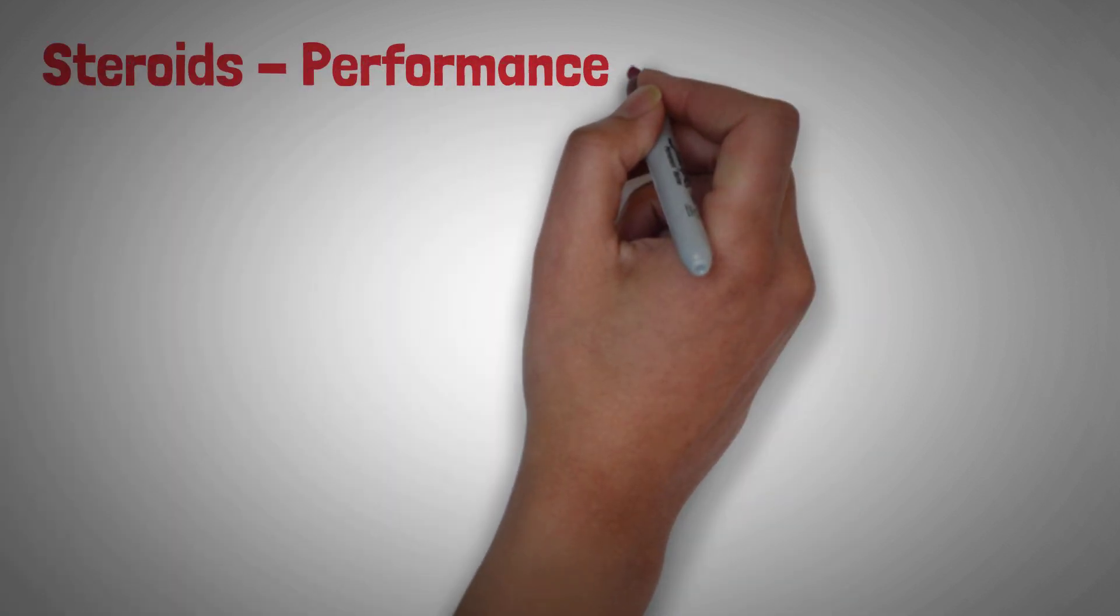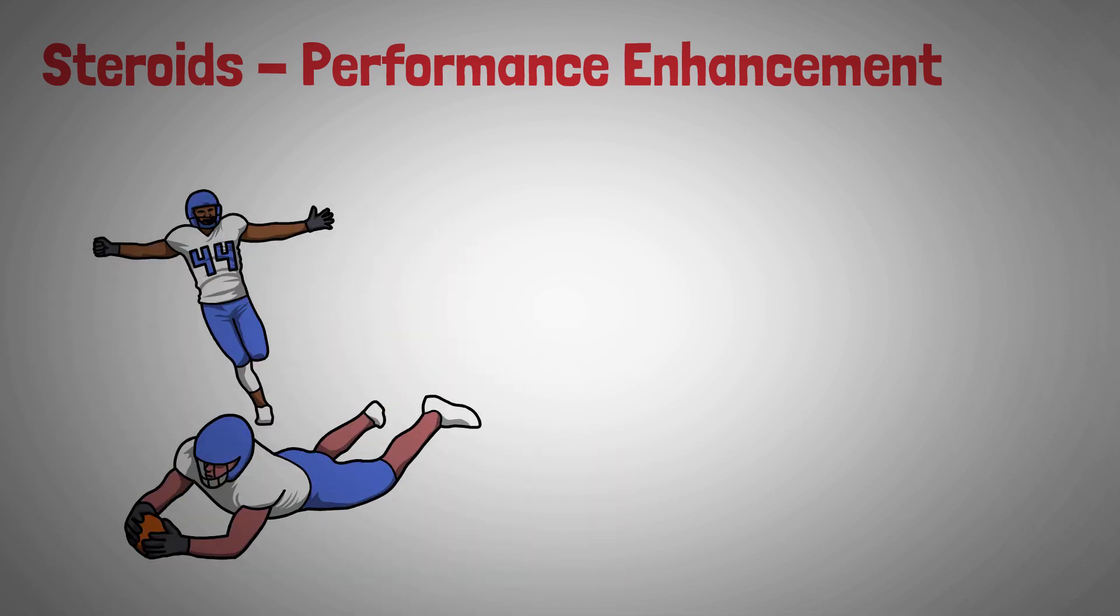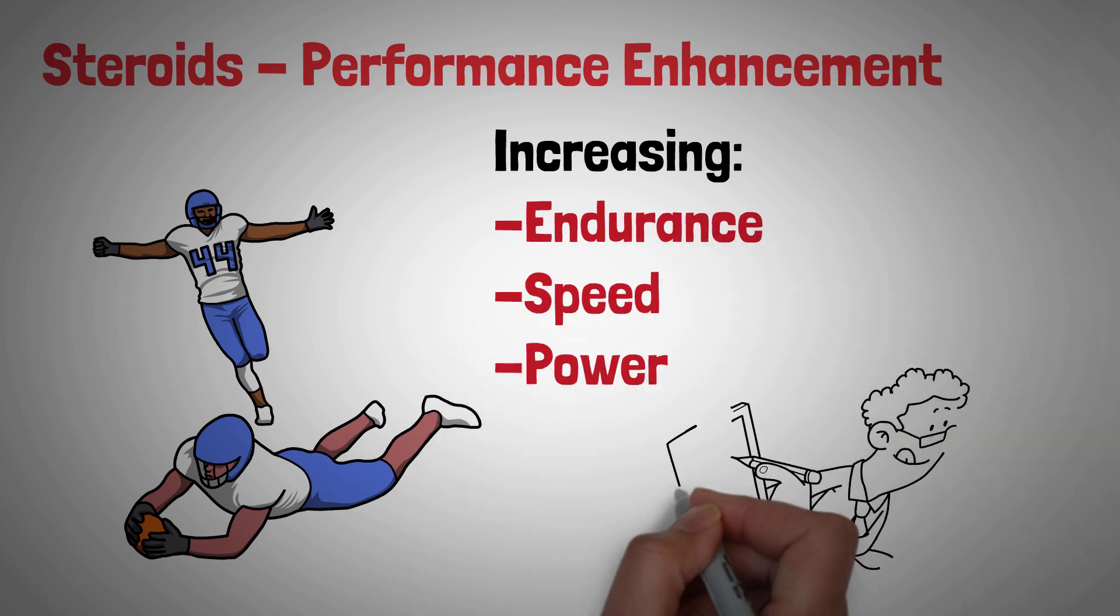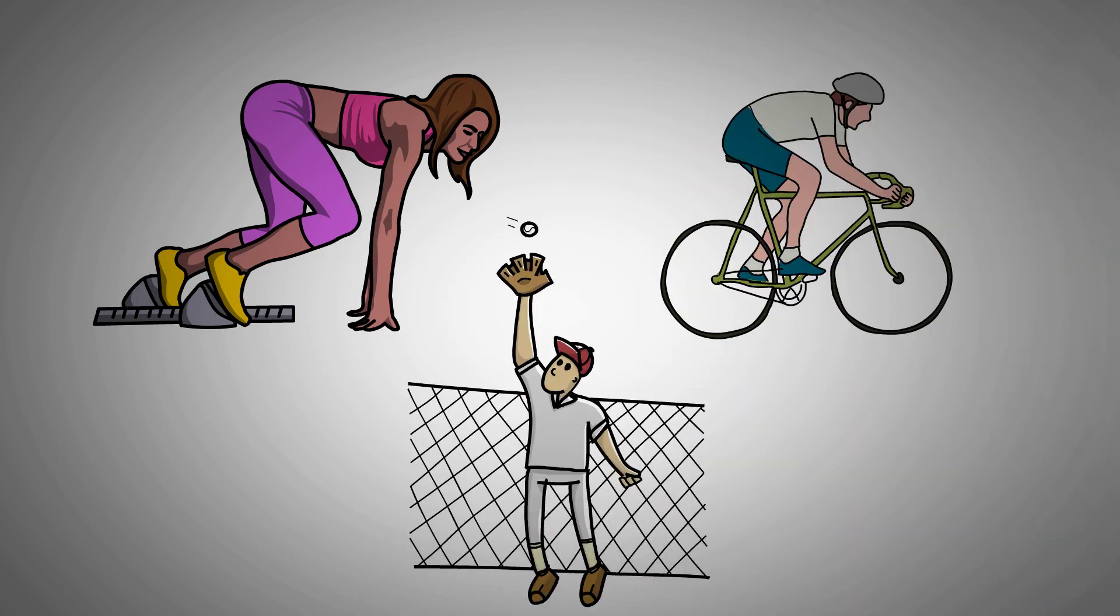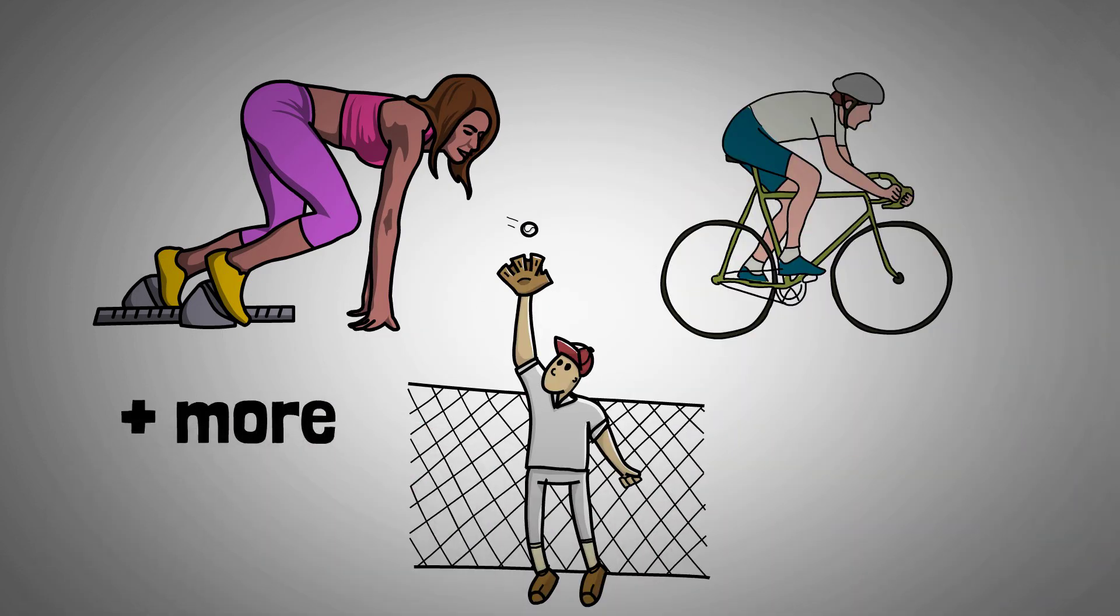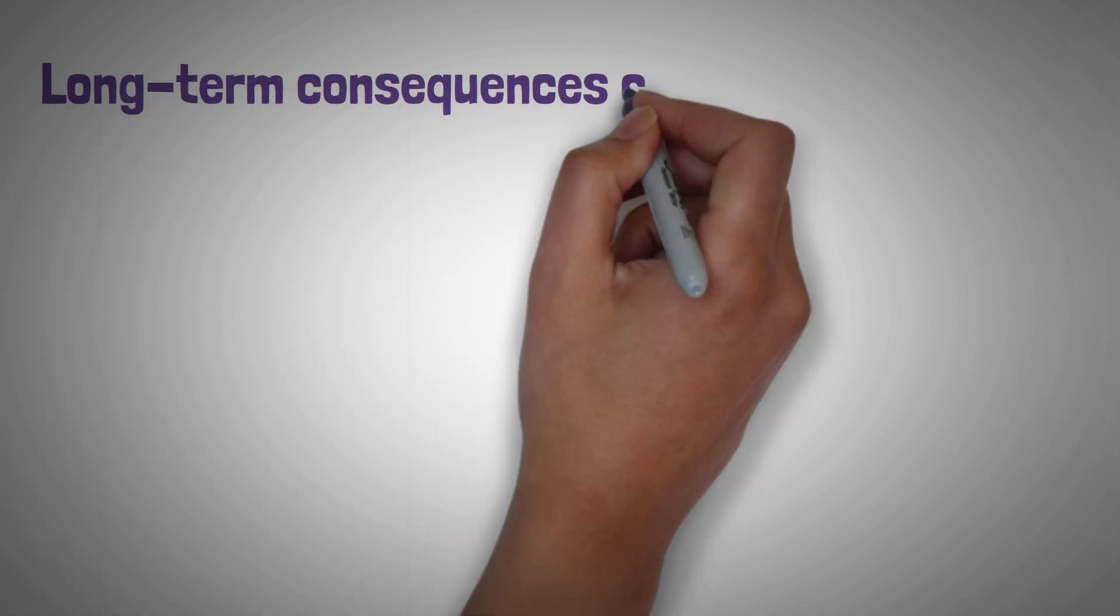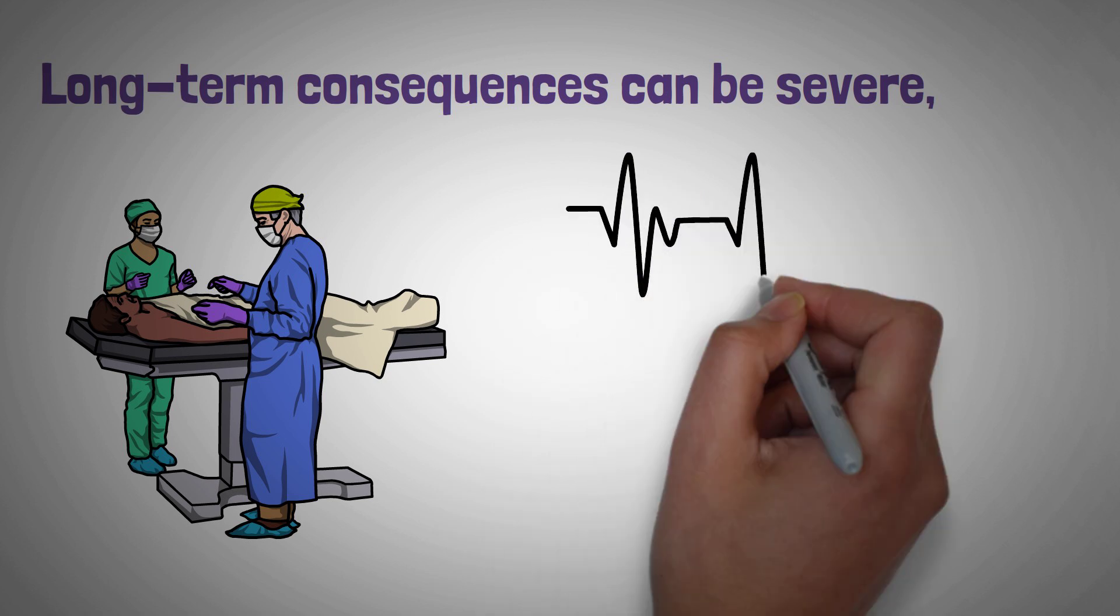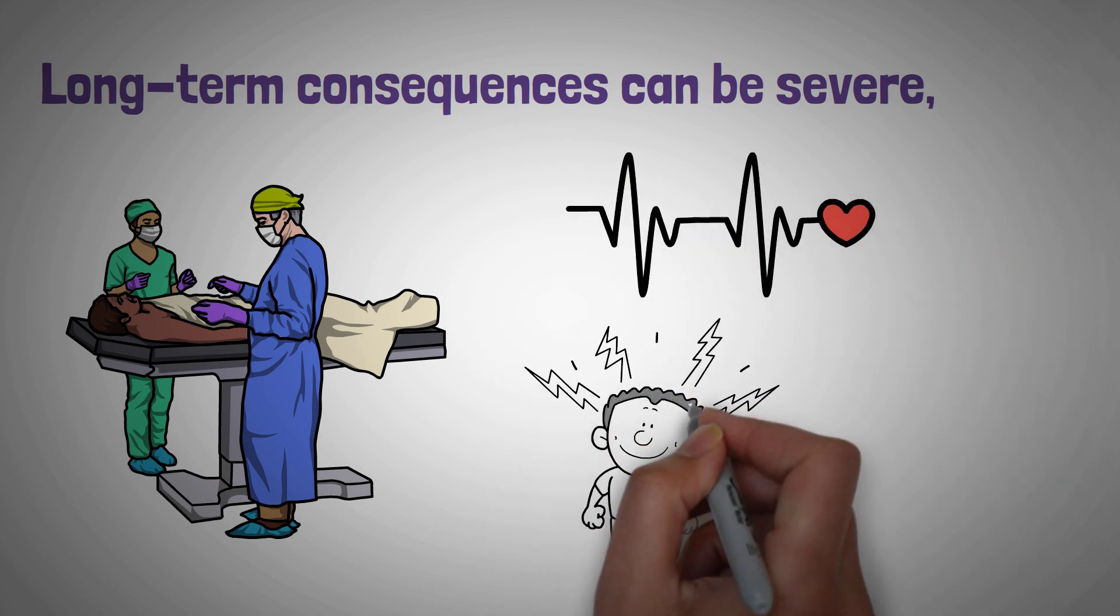In addition to building muscle, steroids are also used to enhance athletic performance by increasing endurance, speed, and power. Athletes in sports, such as track and field, cycling, and baseball, have been known to use steroids to gain a competitive edge. While these drugs may provide short-term performance benefits, the long-term consequences can be severe, including increased risk of injury, cardiovascular complications, and psychological dependence.